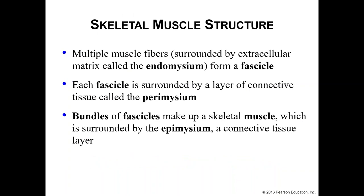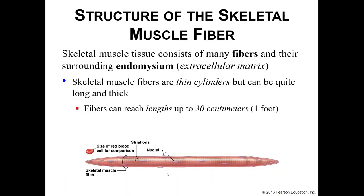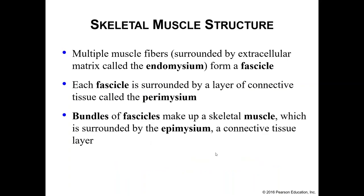Then we start building the muscle itself. We take a bunch of muscle fibers, each surrounded by their endomysium, and bundle them together to form a fascicle. That fascicle is held together with another layer of connective tissue called the perimysium — "peri" meaning around.